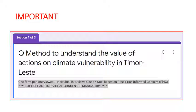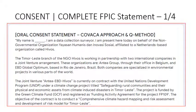Section 1 of Form 3, containing the Q-method questions, starts with the consent. It's one form per interviewee, a one-on-one interview, and it's based on the so-called Free Prior Informed Consent, or FPIC. We need this explicit individual consent for all Q-method interviews. This is mandatory, and you ensure it by reading the consent form out loud.